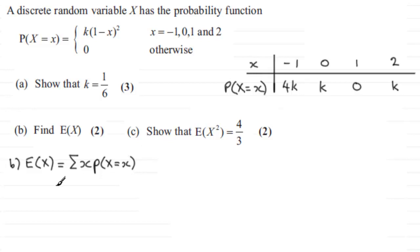So when it comes to working this out all we need to do is do minus 1 first of all and multiply that with 4k. We'll keep in terms of K rather than just putting in 1 sixth at this stage. And then we've got 0 times K.